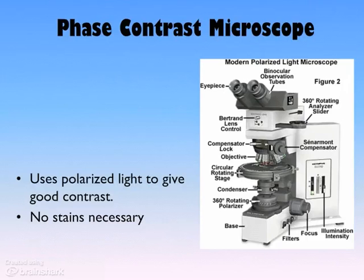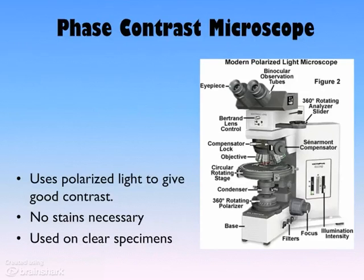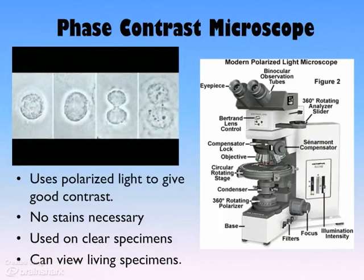Because of the polarized light and the way the light interacts with the specimen, no stains are necessary, and this allows us to use the phase contrast microscope on clear specimens. The stains typically are not so friendly, so not having to use them allows us also to look at living specimens and get some pretty cool shots of cells going through life doing living processes like mitosis.